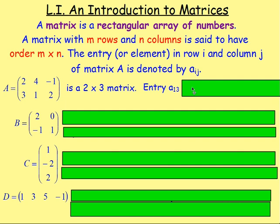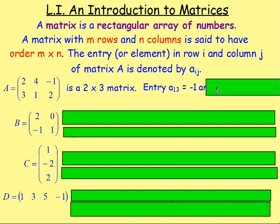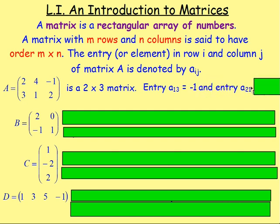Entry A one three — so first row, third column — would be negative one. And entry A two one will be the second row, first column. So that would be three.